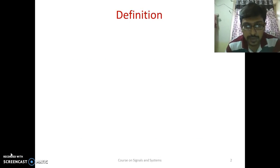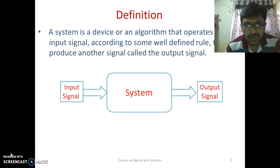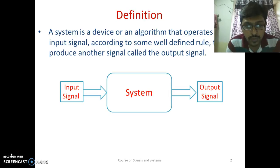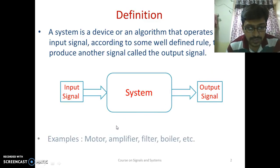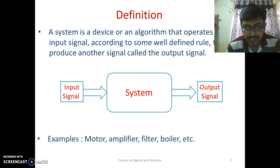To start with, we will define the system. A system is a device or an algorithm that operates on an input signal and according to some well-defined rule, it produces another signal which is called the output signal. As shown in the diagram, the input signal is applied to the system, it does some process on it and produces an output signal. Examples of systems include motor, amplifier, filter, boiler, and digital filters like FIR, IIR, etc.